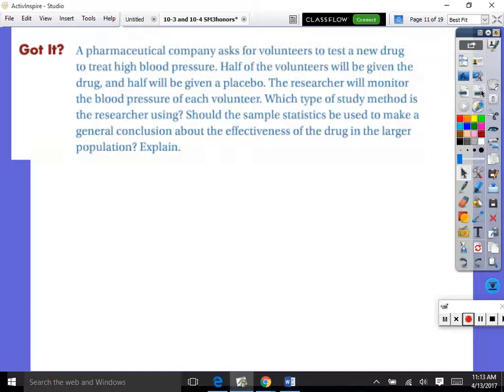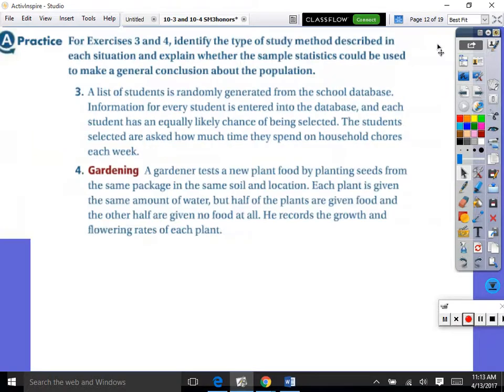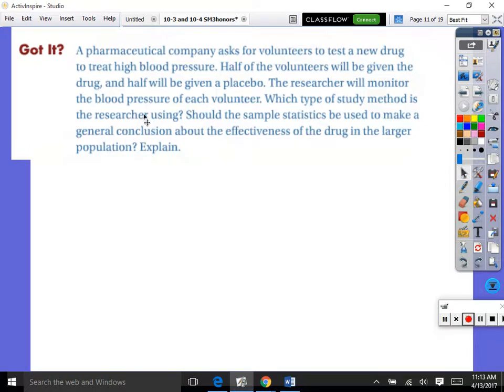How about this one? A pharmaceutical company asks for volunteers to test a new drug to treat blood pressure. This is what is really done in real life most often. You hear it on the radio all the time. A kid in my class is getting his wisdom teeth out in a week for an experiment like this. Exactly, it's going to be for a pain medication. Half of the volunteers will be given the drug, half will be given the placebo. The researcher will monitor the blood pressure of each volunteer. Which type of study method is the researcher using? It's a control experiment. That's good. Should the sample statistic be used to make a general conclusion about the effectiveness of the drug in a larger population? It depends on how they get people. If they're going to an old folks home and getting everybody to come from there, it's going to over-represent old folks. But if they're getting a bunch of different ages and randomly selecting people, I think it's probably good.